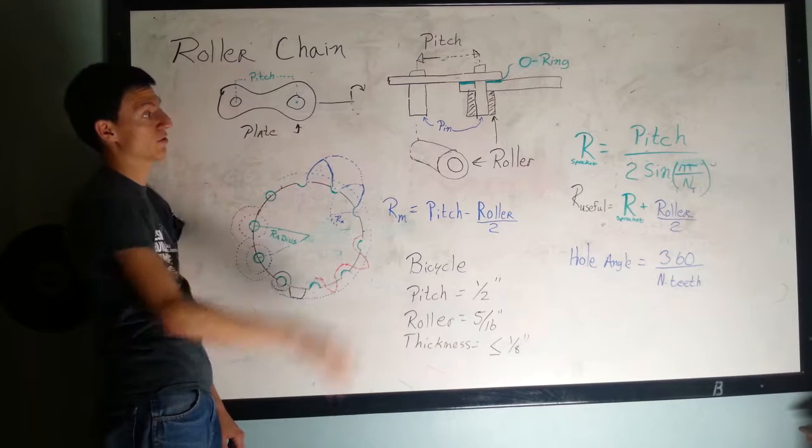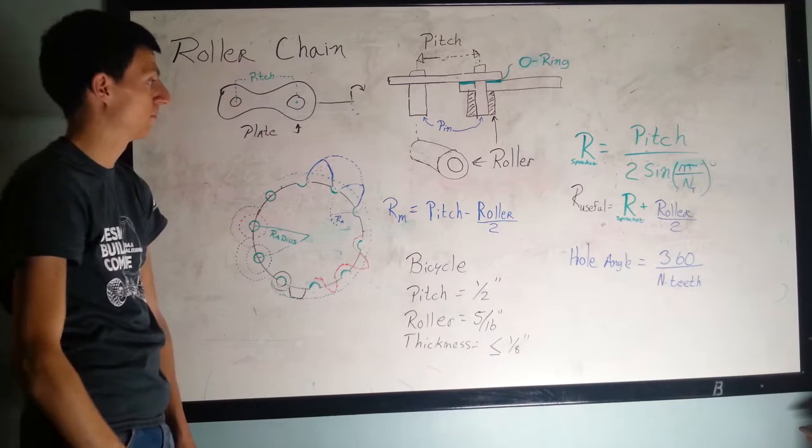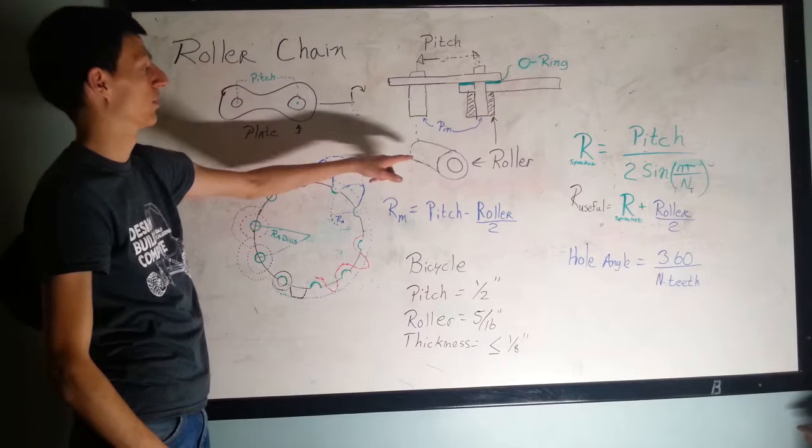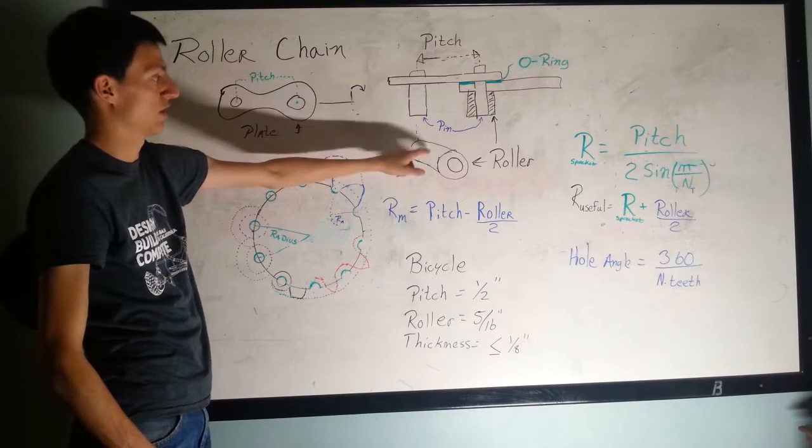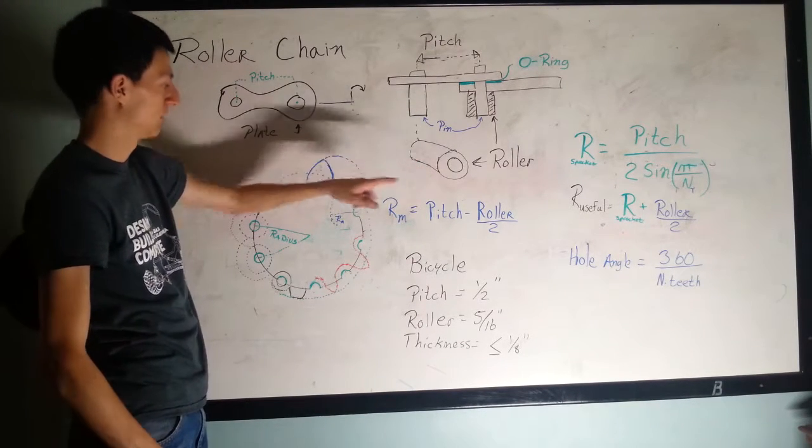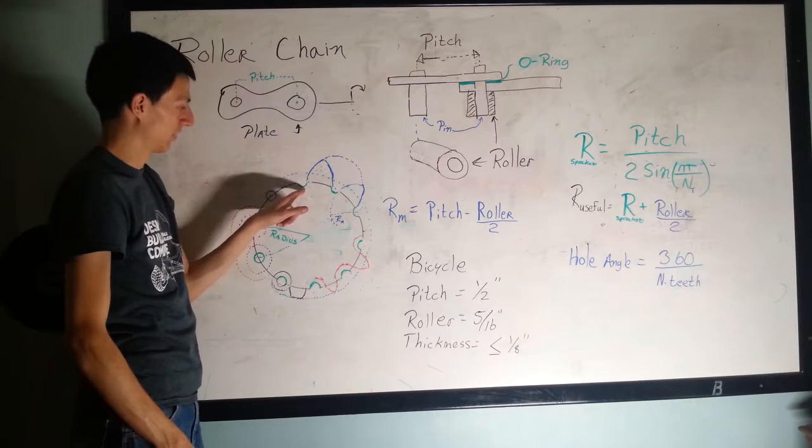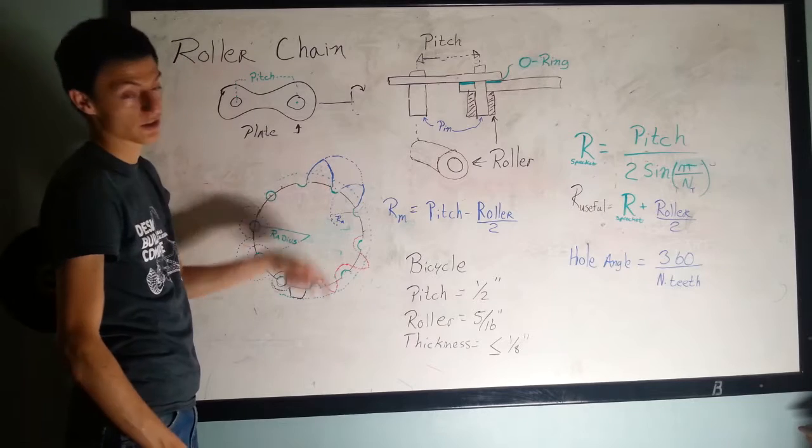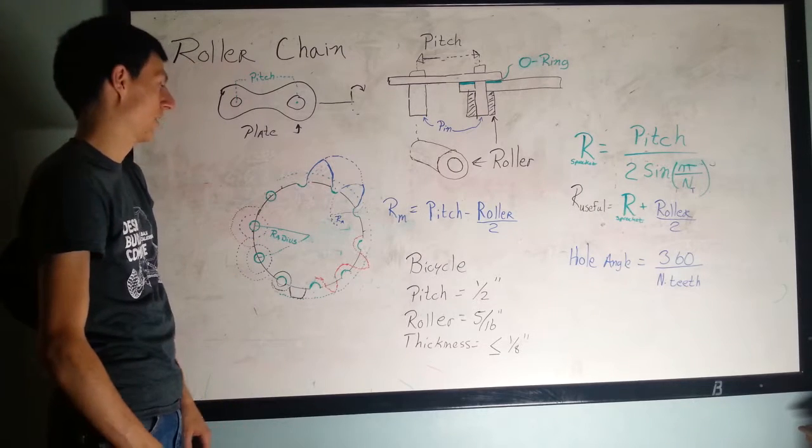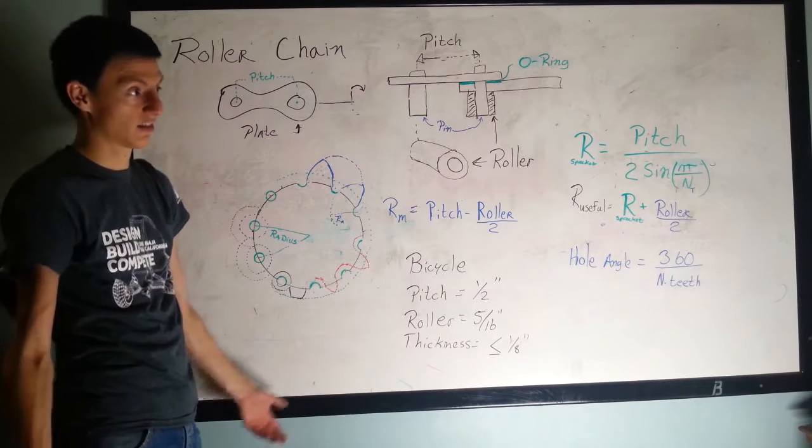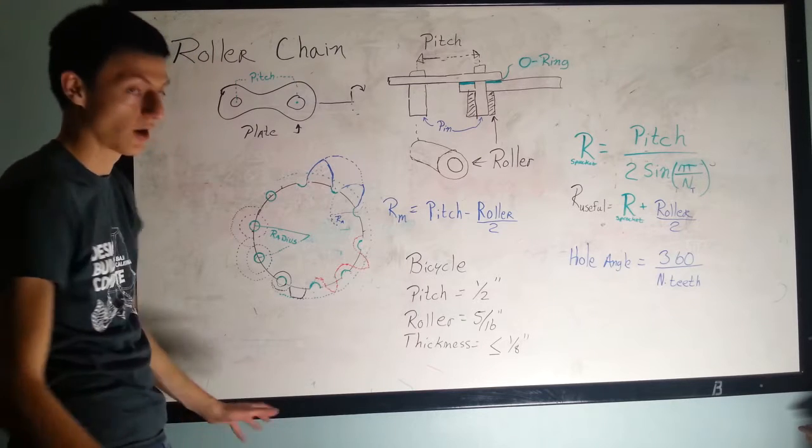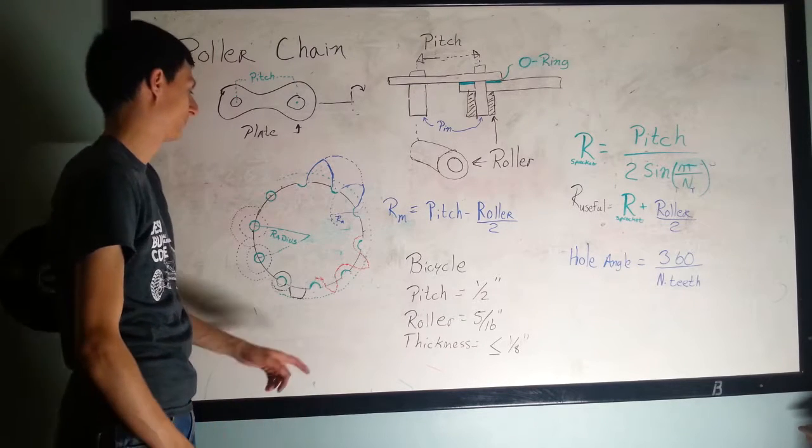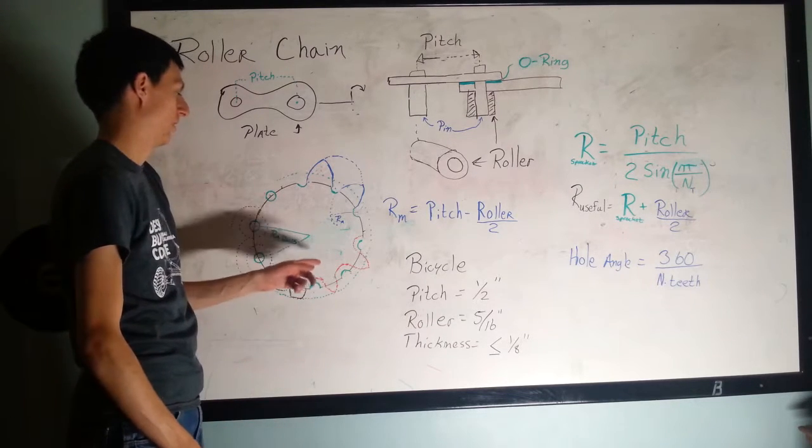If you have bushing chain, which is normal chain that doesn't have the little roller in the middle, they have real big teeth that stick out and tiny little holes where the chain goes. They say those are less likely to skip.